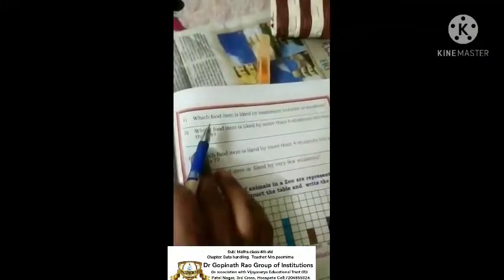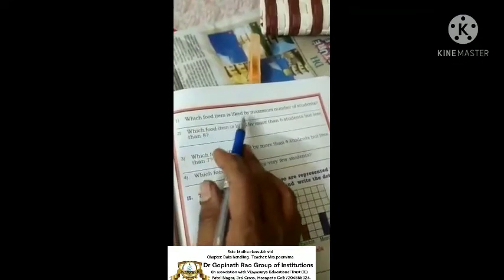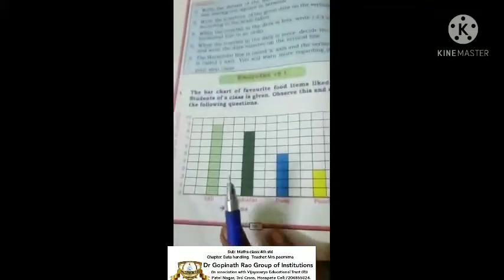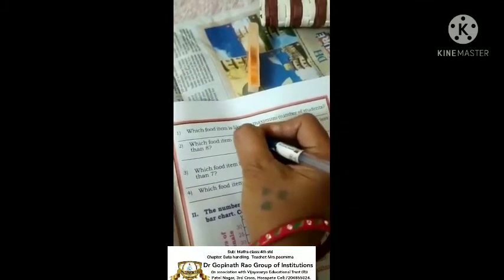Here, we have food items liked by 25 students of the class is given. Observe this and answer the following questions. Idli, chapati, dosa, puri. Which food item is liked by the maximum students? Here, idli.